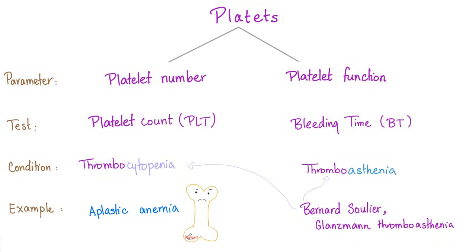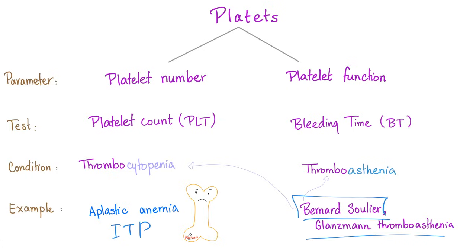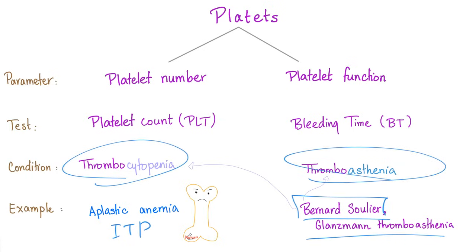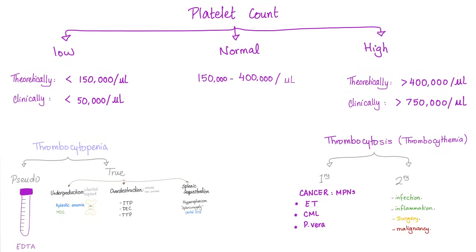We test for platelet number problems with platelet count, and for function problems with bleeding time. Examples of thrombocytopenia include aplastic anemia and immune thrombocytopenic purpura. Examples of thrombasthenia include Bernard-Soulier and Glanzmann thrombasthenia — note that Bernard-Soulier has both thrombocytopenia and thrombasthenia. Platelet count can be normal, low, or high. Theoretically, thrombocytopenia is below 150,000, but clinically it becomes significant below 50,000.